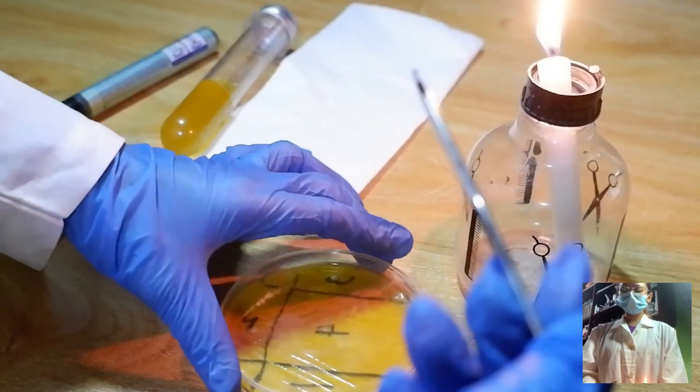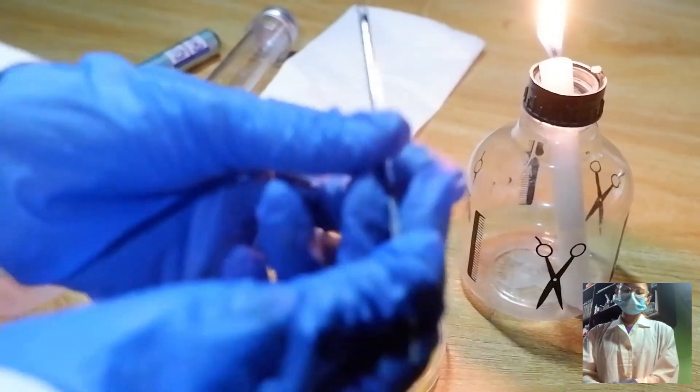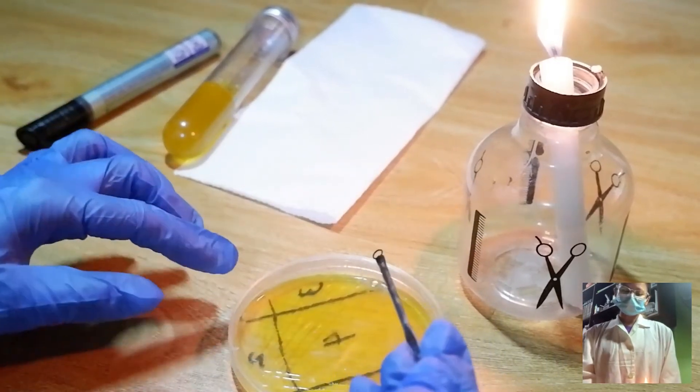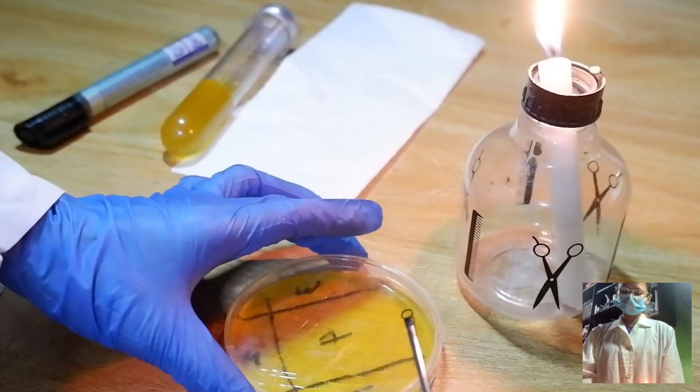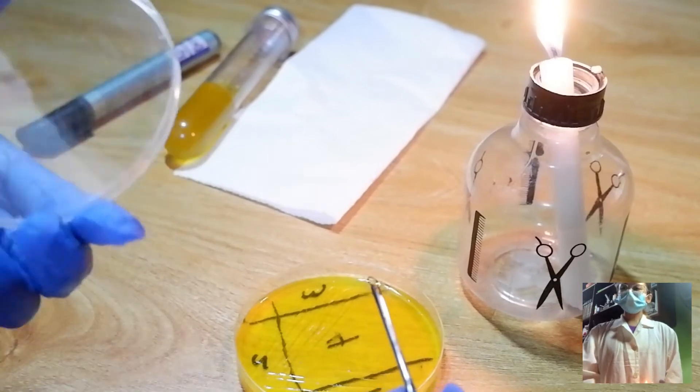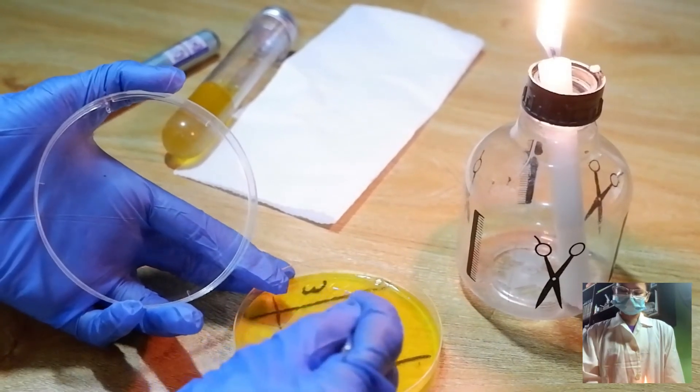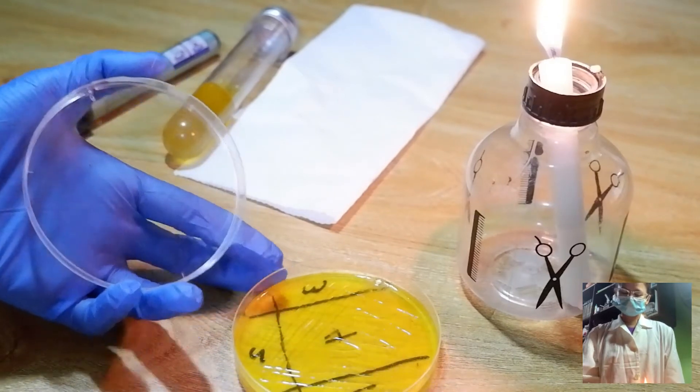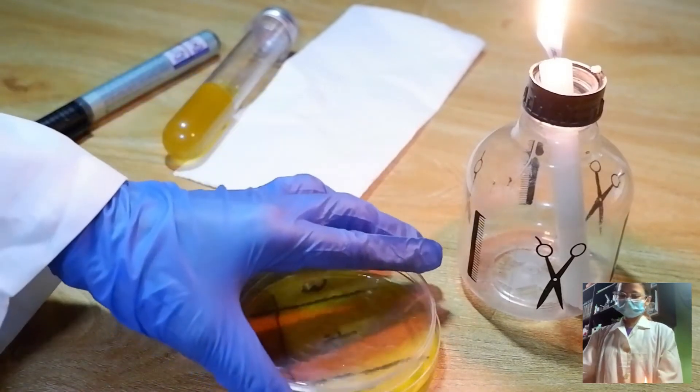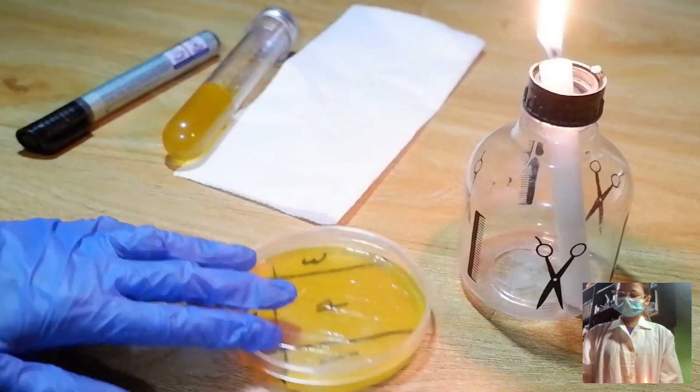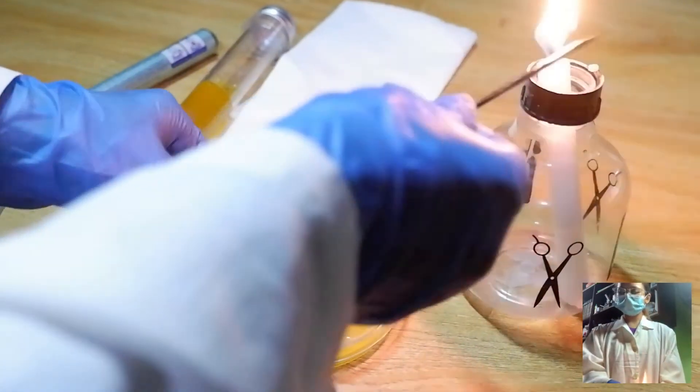So, when it has cooled down, we will now streak from quadrant 3 to 4, as many streaks as we can. And flame the loop again to sterilize.